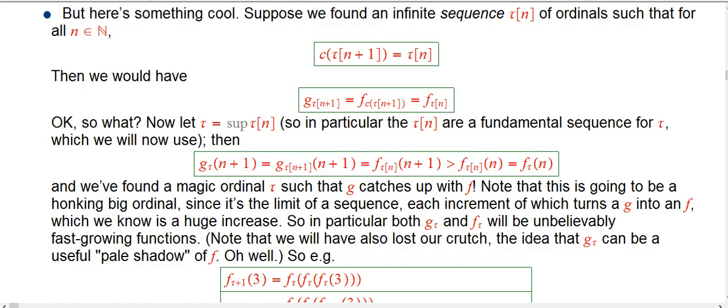So both g sub tau and f sub tau, which we now know are very comparably fast-growing, will be unbelievably fast-growing functions.